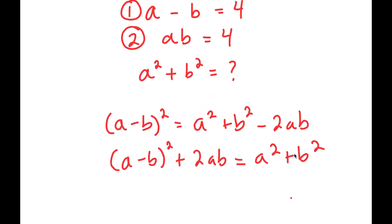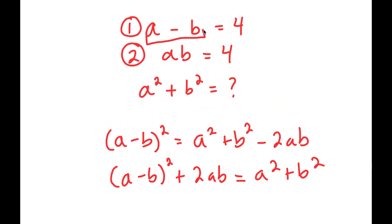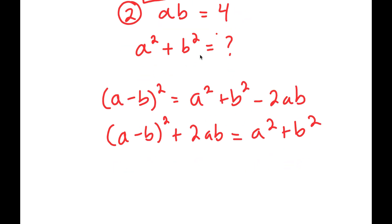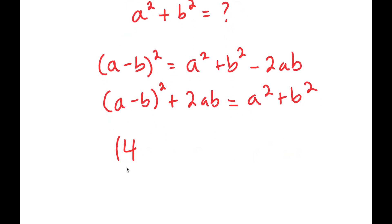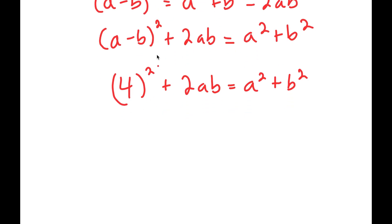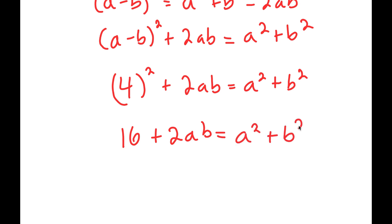Notice how we were given a minus b over here, so a minus b is equal to 4. So I get 4 squared plus 2ab is equal to a squared plus b squared. Now 4 squared is 16, so I get 16 plus 2ab is equal to a squared plus b squared.